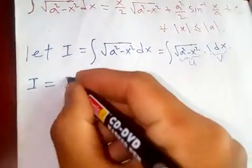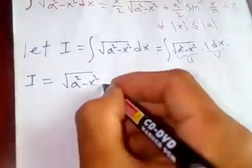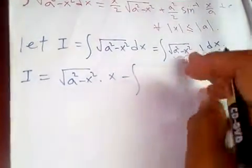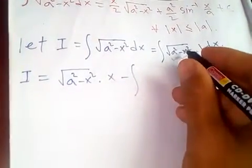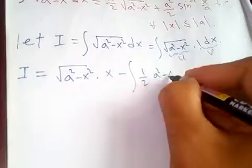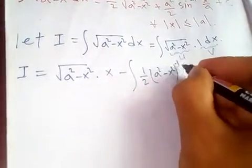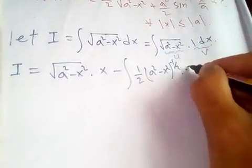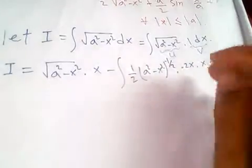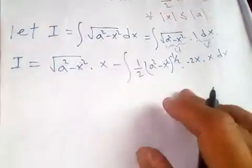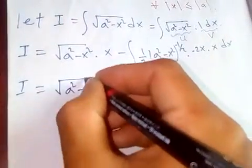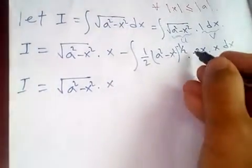Applying integration by parts: first function times the direct integral of the second function, minus the integral of the derivative of the first function times the integral of the second. The derivative of √(a² - x²) is (1/2)(a² - x²)^(-1/2) · (-2x), and the integral of 1 dx is x.